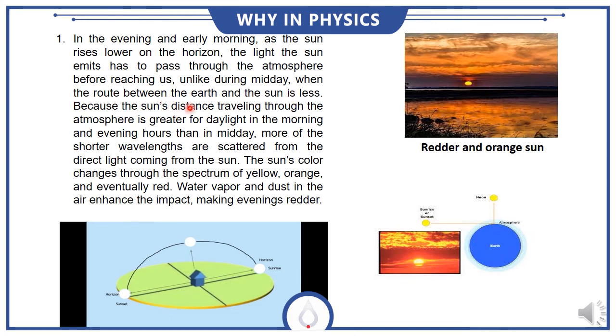Because the sun's light travels a greater distance through the atmosphere in the morning and evening than at midday, more of the shorter wavelengths are scattered from the direct light coming from the sun.